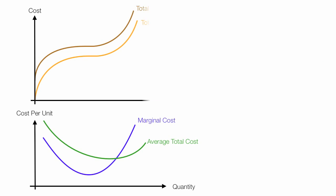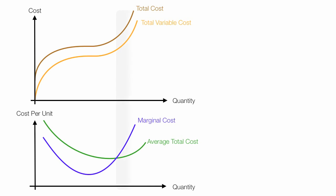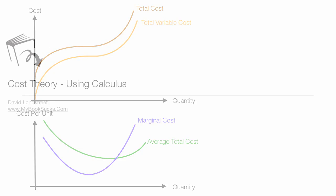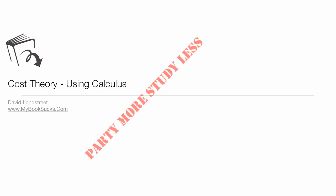Let me summarize. In the first part of the graph — I'll gray it in — we have economies of scale. On the right side, we have diseconomies of scale. If you completed all three videos, I should be giving you a t-shirt or something. Thank you for watching.